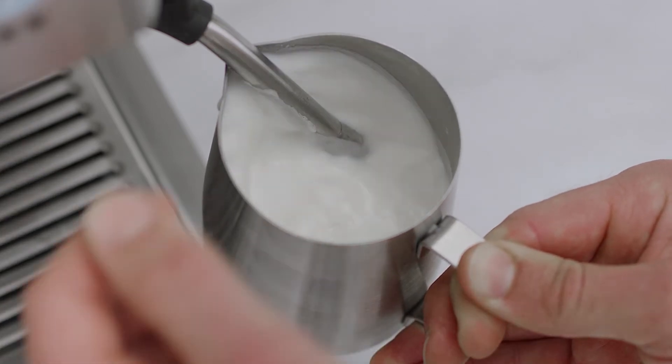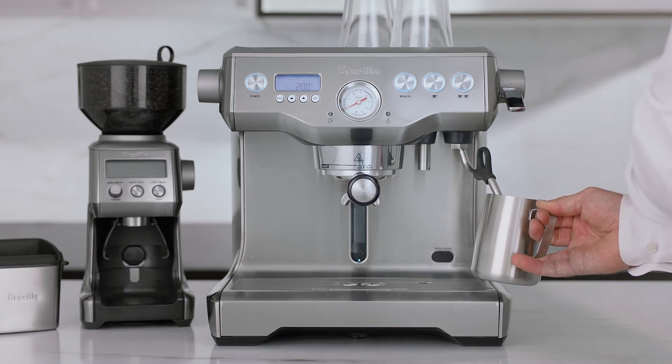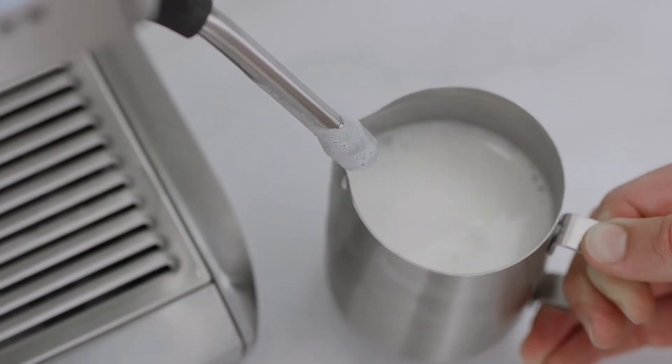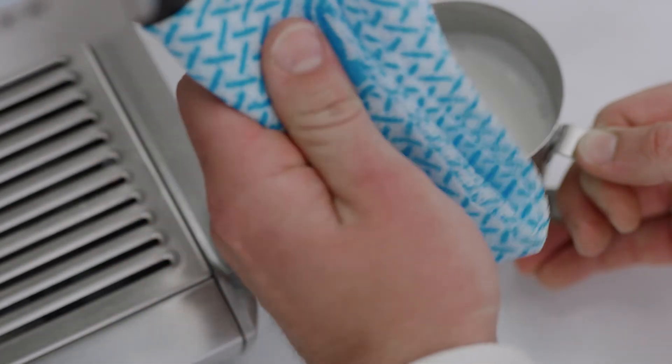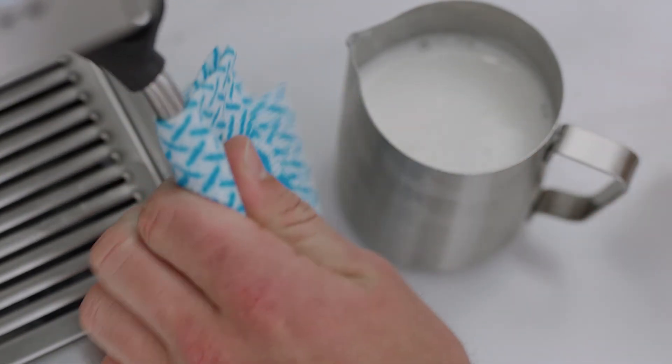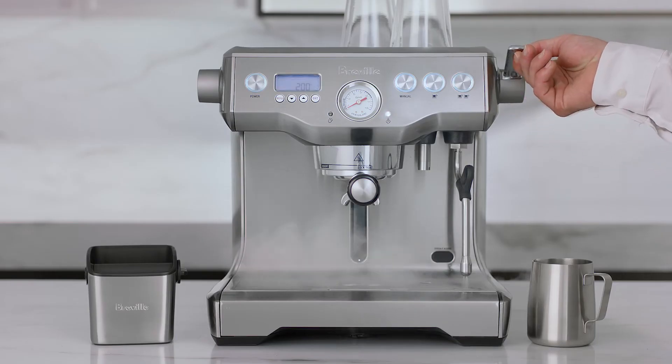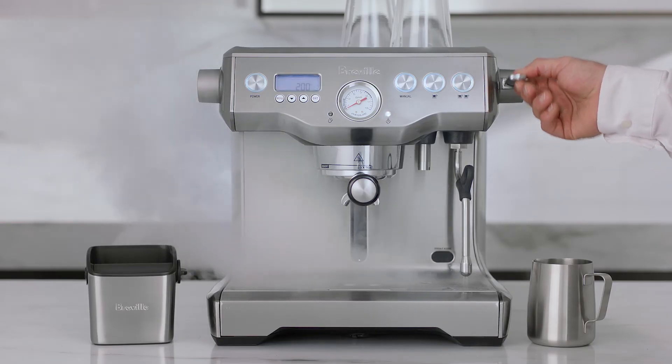Lower the steam lever or turn the steam dial to the upright position to finish. Once the steam has stopped, remove the wand from the jug and immediately wipe it with a clean, damp cloth. Position the steam tip over the drip tray and lift the steam lever or turn the steam dial again to purge any milk from the tip.